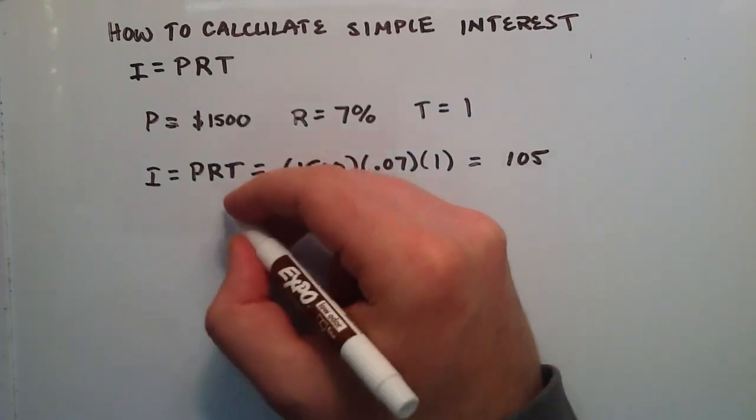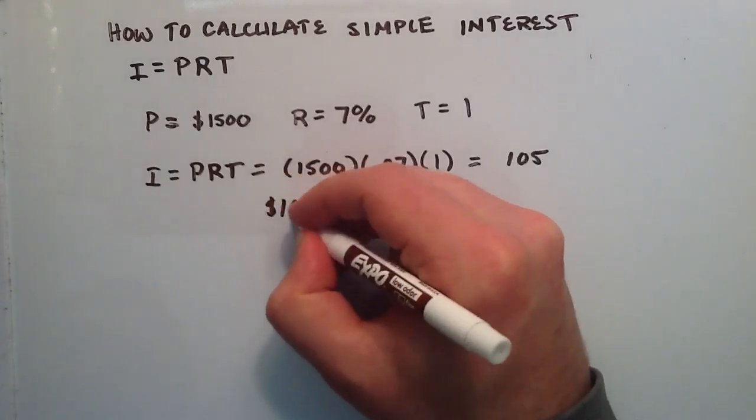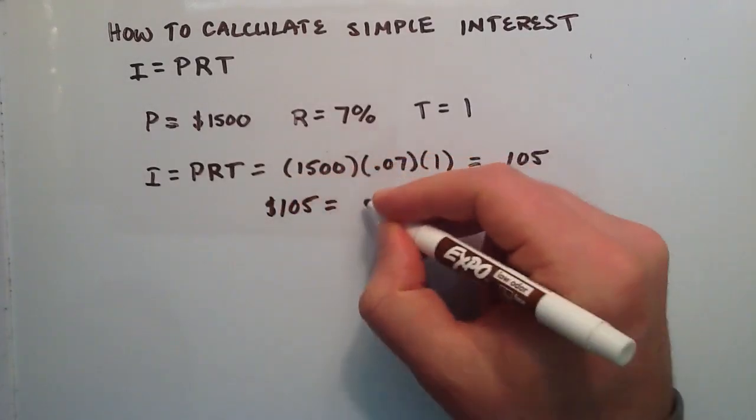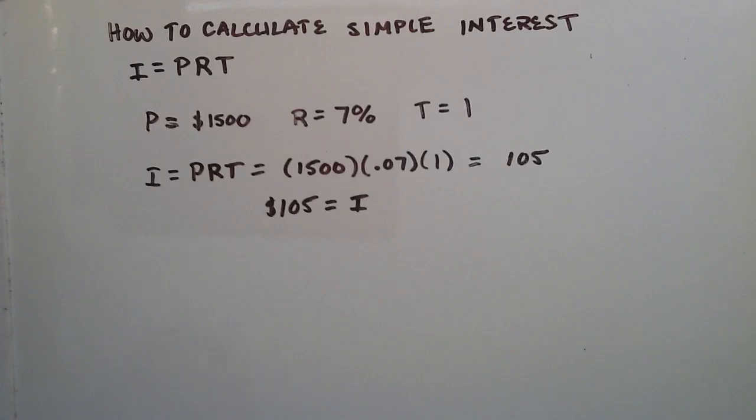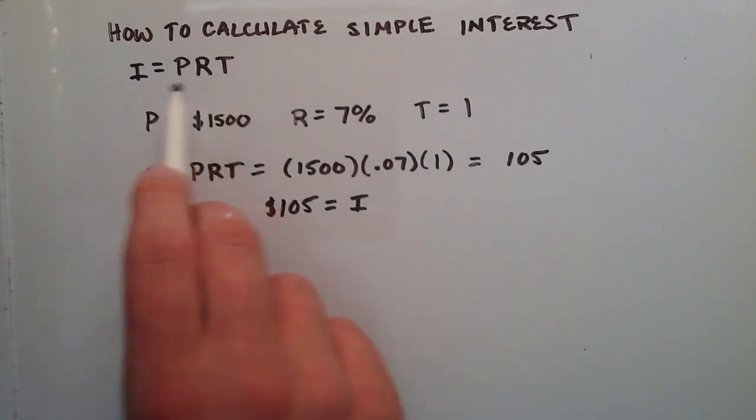So $105 would be the amount of interest that we would make on this investment in one year. In the real world, we usually do compounded interest. But since this is an intermediate algebra series, I'm just going to show you the simple interest method.